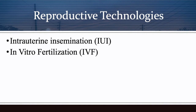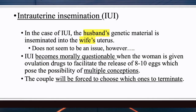We'll look at two reproductive technologies in this PowerPoint. The first is intrauterine insemination (IUI) and the second is in vitro fertilization (IVF). In IUI, the husband's genetic material — sperm — is inseminated into the wife's uterus. Medical technology helps the wife's egg be inseminated by the husband's sperm for a successful fertilization, making this not seem to be any issue at all since it's husband and wife.